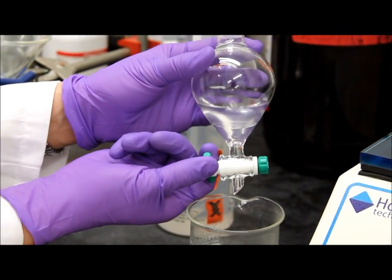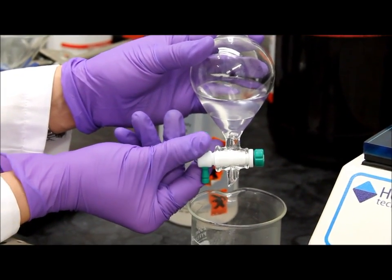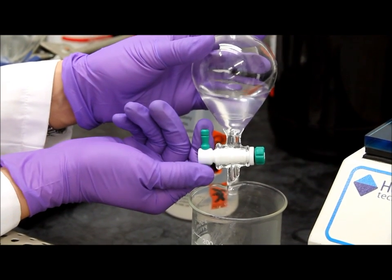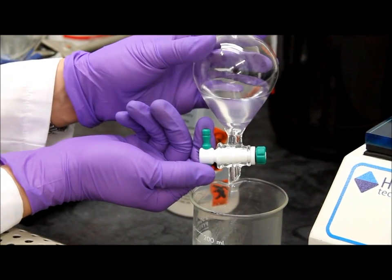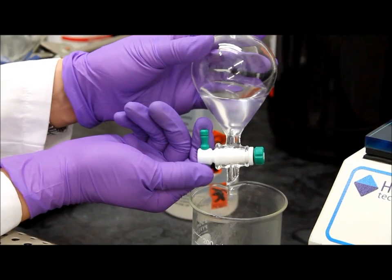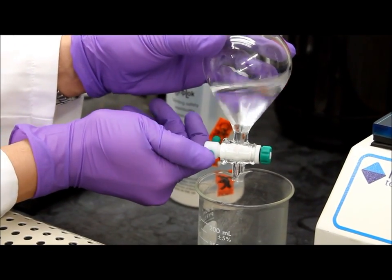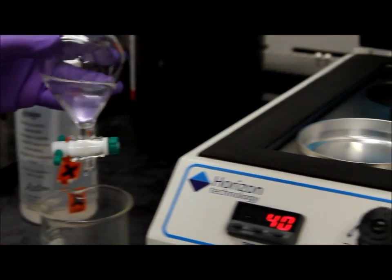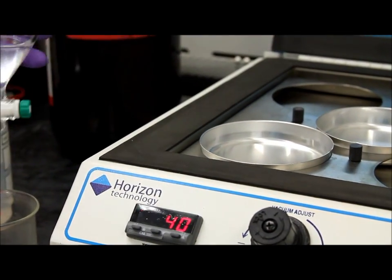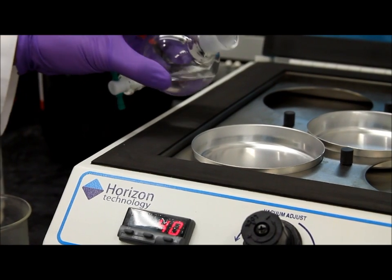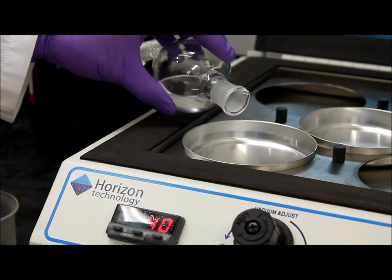So here I am draining out the excess water through the sub funnel. You want to drain as much water as possible without losing any extracts. Once that's done, pour the extract in a pre-weighed pan into the speed bath.